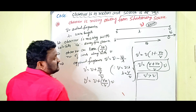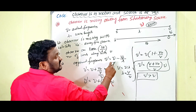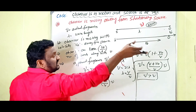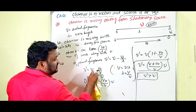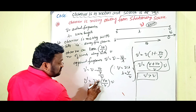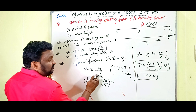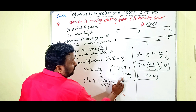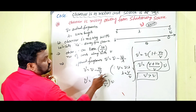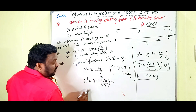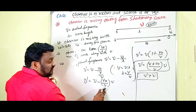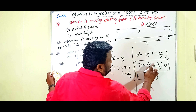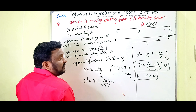Since the observer loses v₀/λ waves, we write a minus sign. The apparent frequency is: ν' = ν − v₀/λ. Since λ = v/ν, substituting: ν' = ν − v₀ν/v, which gives ν' = ν(1 − v₀/v). Taking LCM: ν' = [(v − v₀)/v] × ν. In this case, the numerator has (v − v₀), which means the apparent frequency is decreased.